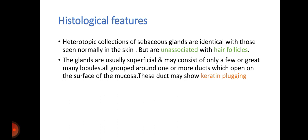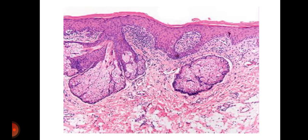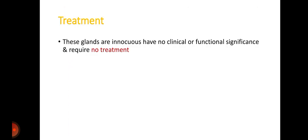These glands are usually superficial and may consist of only a few or a great many lobules, all grouped around one or more ducts which open on the surface of the mucosa. This duct may show keratin plugging. Here you can see the histological representation.